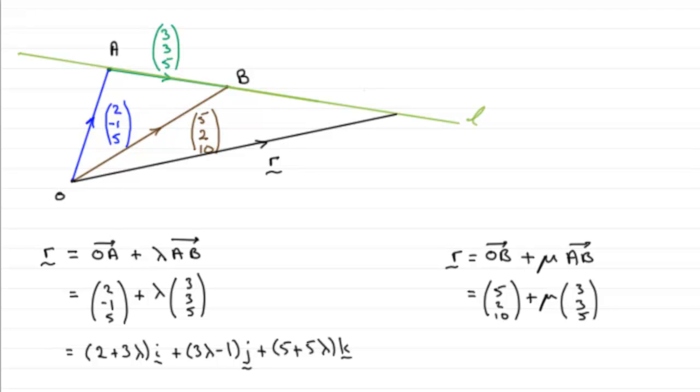I can just demonstrate that to get to this point, for instance, if we were using this version of the line, lambda would be most probably about 2 and a bit. I'll show you, because if we take the vector A to B.